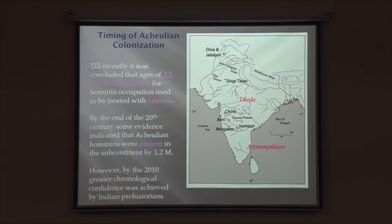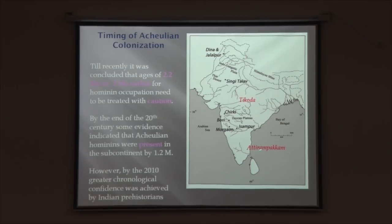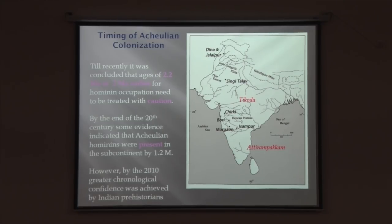Thikwada now has an excellent sequence with dates — unfortunately not yet published. The investigators have paleomagnetic dates as well as absolute dates similar to those applied at Athirampakam, and the site seems to be even older than 1.5 million years. These three sites — Thikwada, Isampur, and Athirampakam — have transformed our understanding of the earliest settlements in the Indian subcontinent.